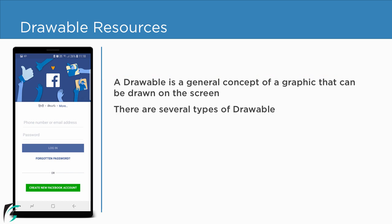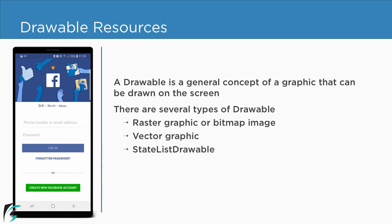Now in Android, there are several types of drawable resources such as the raster graphic or the bitmap image, the vector graphic, and the state list drawable. In case of a button, we have already used the state list drawable — that is, the background of the button changes with respect to the state of the button.